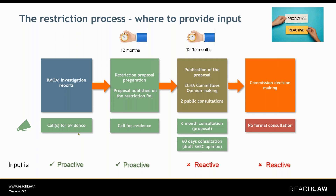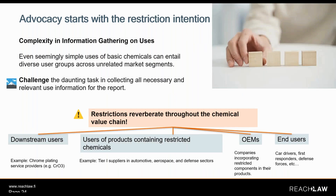Definitely start at the beginning of the process, or even earlier if there's an RMOA. Once the intention has been announced on the Registry, the dossier submitter — which can be ECHA, a member state, or a group of member states — is on the clock to prepare the restriction option within 12 months. The dossier submitter team will typically be quite small and will have a challenging task as they need very detailed information on uses, which can be complex. Even seemingly simple chemicals can entail diverse use groups across seemingly unrelated markets.